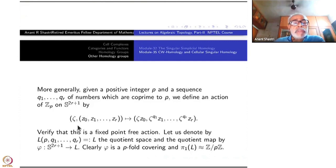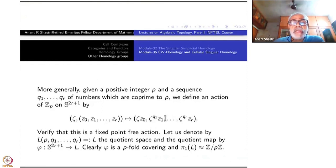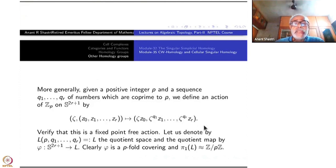Then take the action: (Z₀, Z₁, ..., Z_R) going to (ξZ₀, ξ^(Q₁)Z₁, ..., ξ^(Q_R)Z_R). When there is only one Q, it stopped at ξ^Q Z₁. Now I am taking several of them; each time I am multiplying by the corresponding ξ^(Q_i) times Z_i. That is the action. Once again, this is C-linear and norm-preserving, so it will give a fixed-point free action.